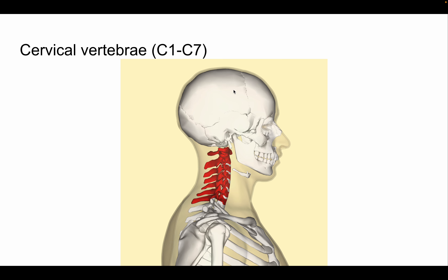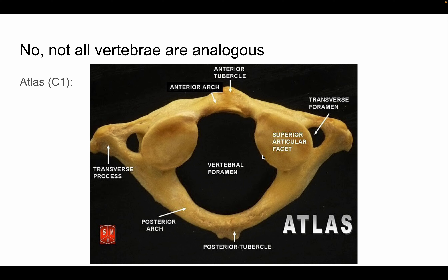Now let's move on to the cervical vertebrae, C1 through C7 — the neck vertebrae. Not all vertebrae are analogous, so let's go over the atlas first. C1, the atlas, articulates with the occipital condyle and is quite different from the typical thoracic vertebra. The superior articulating facets are much larger here, and C1 has tubercles on each end instead of a spinous process. You'll also notice that all cervical vertebrae have transverse foramina, and they still have transverse processes.